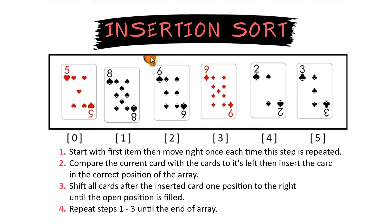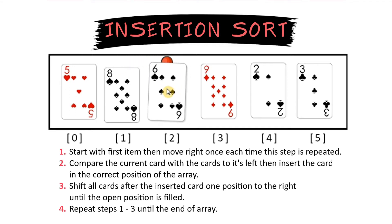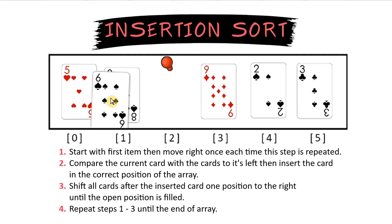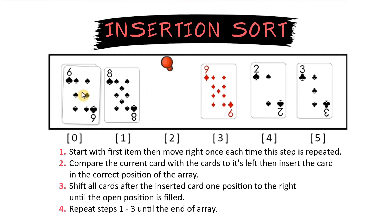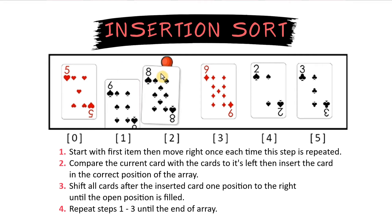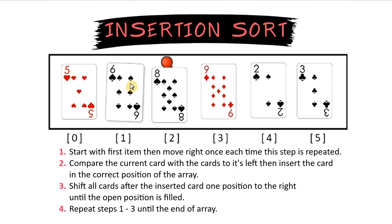Now we move the current item marker to the next spot, which is the 6. Where does the 6 go in terms of the 5 and the 8? Well, it's less than the 8 but greater than the 5, so let's put it after the 5 and shift the 8 over one spot. Now 5, 6, and 8 are sorted.